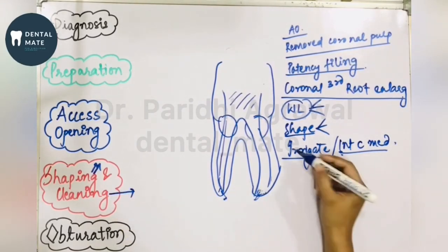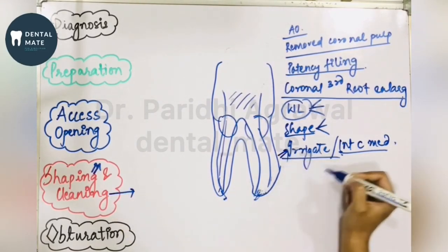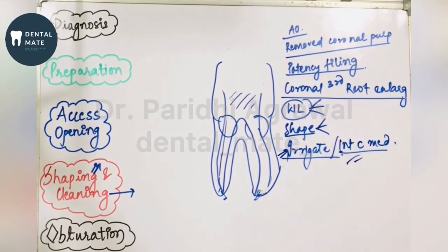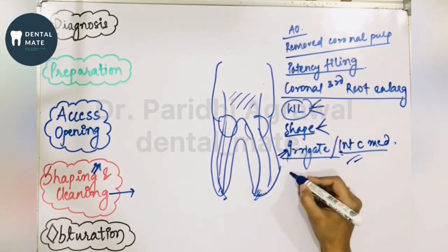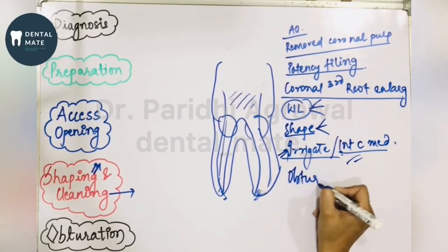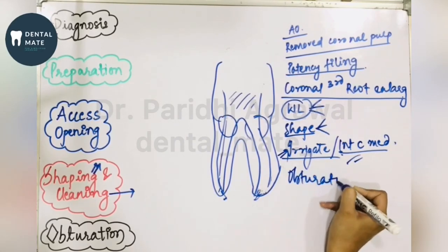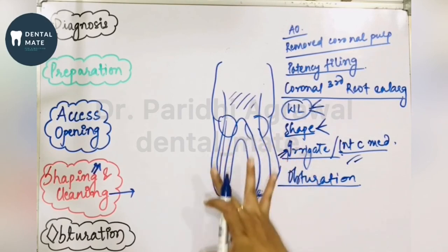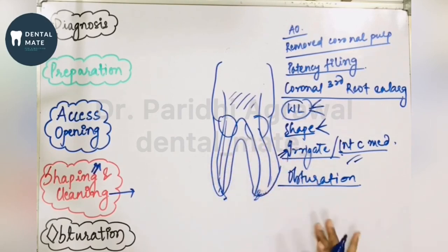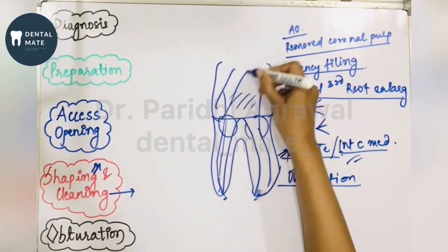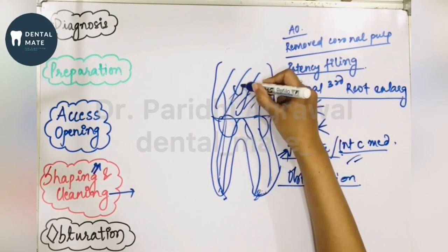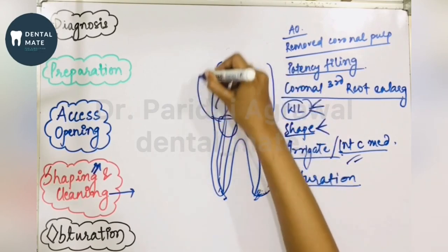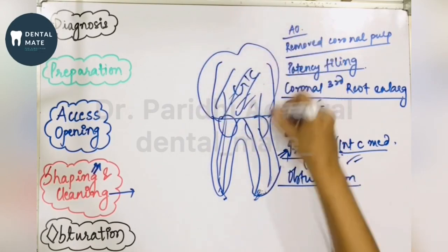The next step is irrigation and placement of intracanal medicaments, which constitutes the cleaning phase — irrigating the canal and placing the medicaments. After that, you obturate the canal with the application of sealer, completing the obturation.